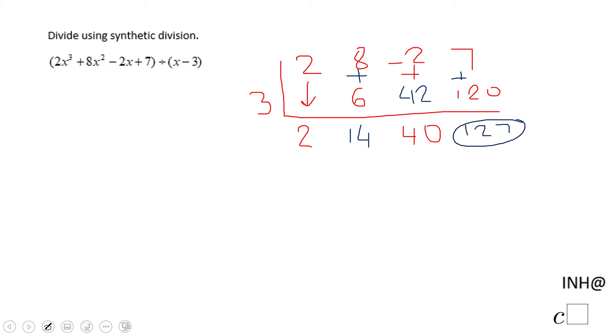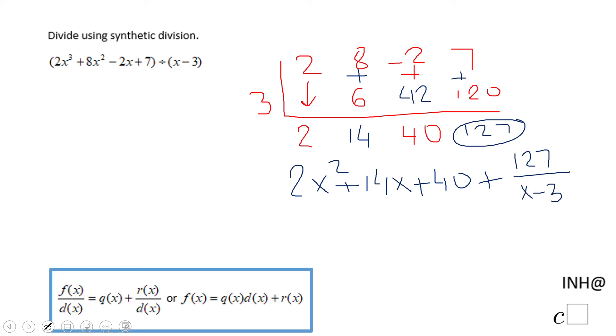Okay, let's see what the other numbers represent. This is 2x² because you drop one degree from the original polynomial, which was 2x³, plus 14x plus 40. Now be careful: the last part is 127 over x minus 3. Now we have this form, you see it here. This is q(x), this is r(x), and that's it.